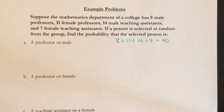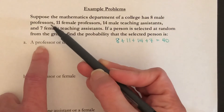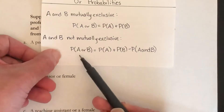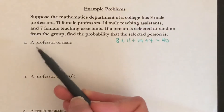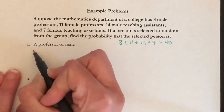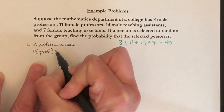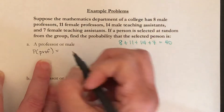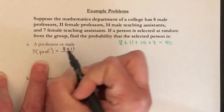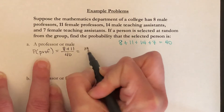Because a person can be both male and a professor, these are not mutually exclusive, so we're going to be using this formula. First I need to find the probability that a person is a professor. There are 8 male professors and 11 female professors I could choose from out of the 40. So the probability that we pick a professor would be 19 out of 40.